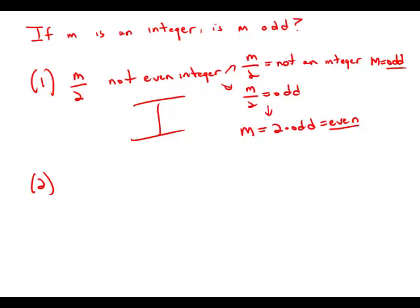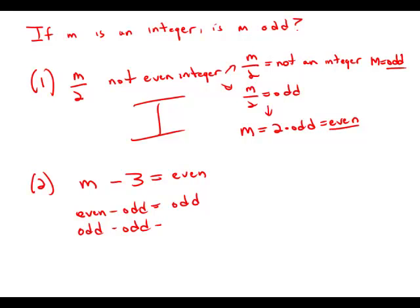Setting Statement 1 aside, let's look at Statement 2: m minus three equals an even integer. We know that even minus odd equals odd, and odd minus odd equals even. Here we have something minus odd equals even, so it must mean that m is odd. Statement 2 conclusively tells us that m is odd, so Statement 2 is sufficient.